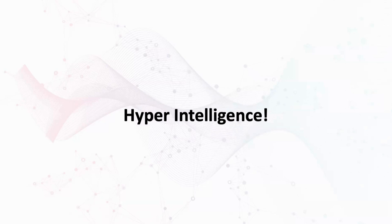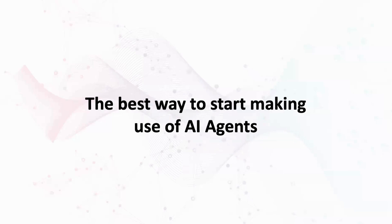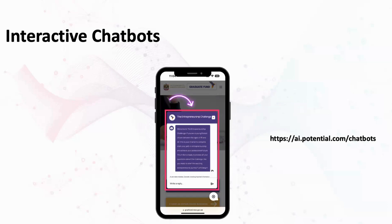This is happening now — companies are rolling this out across their organizations. It might seem overwhelming at first, not knowing where to start. I suggest two main ways to begin making use of AI agents. First, deploy interactive chatbots on your website. Every website can have an intelligent chatbot that visitors interact with — it can serve as customer service and at the same time as a sales rep, upselling and explaining products and services.